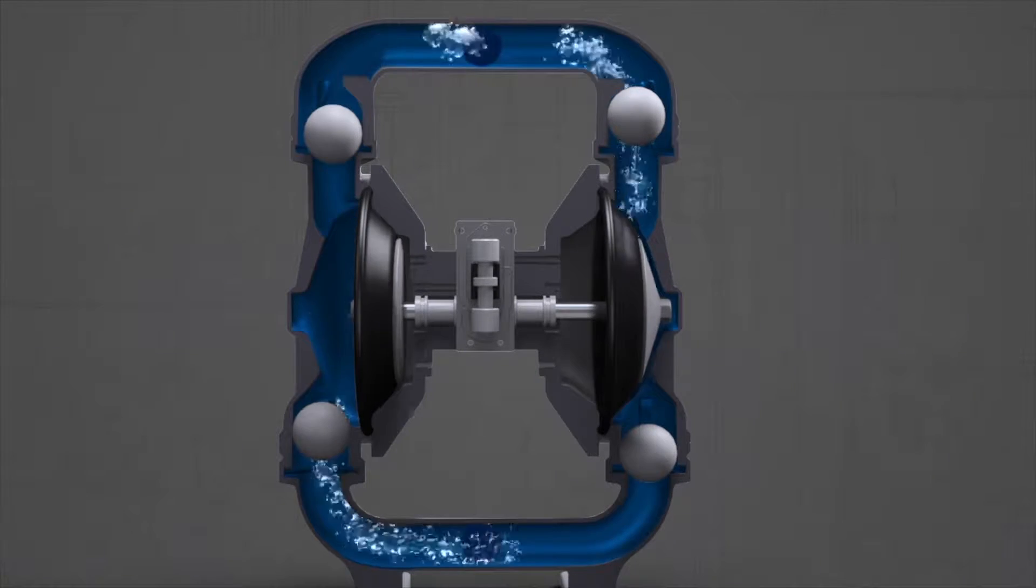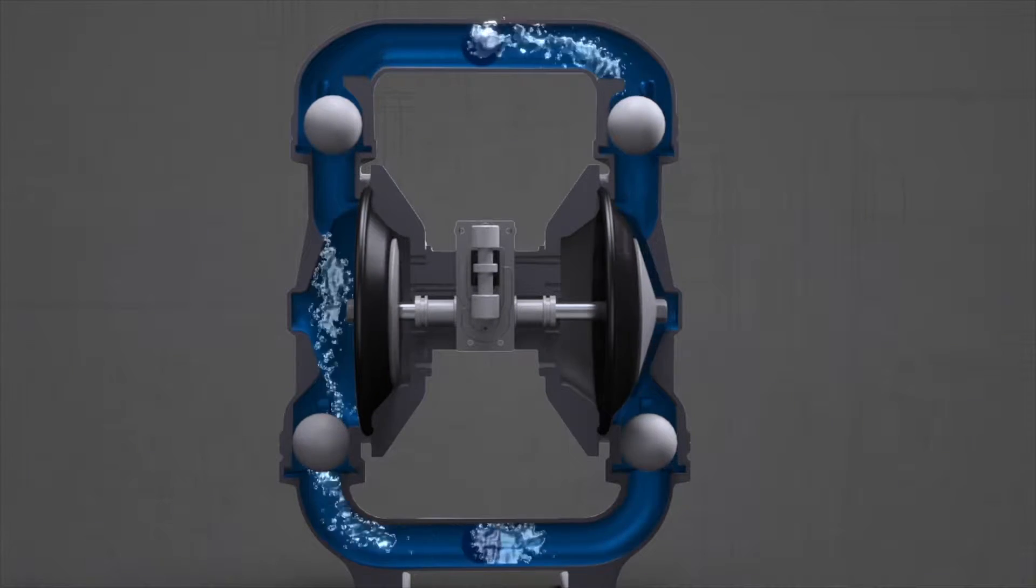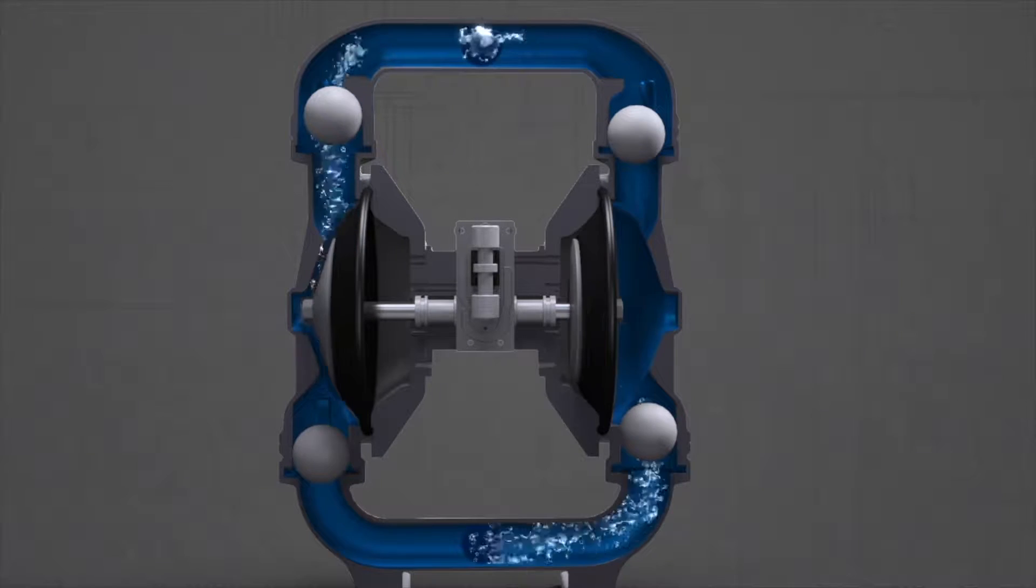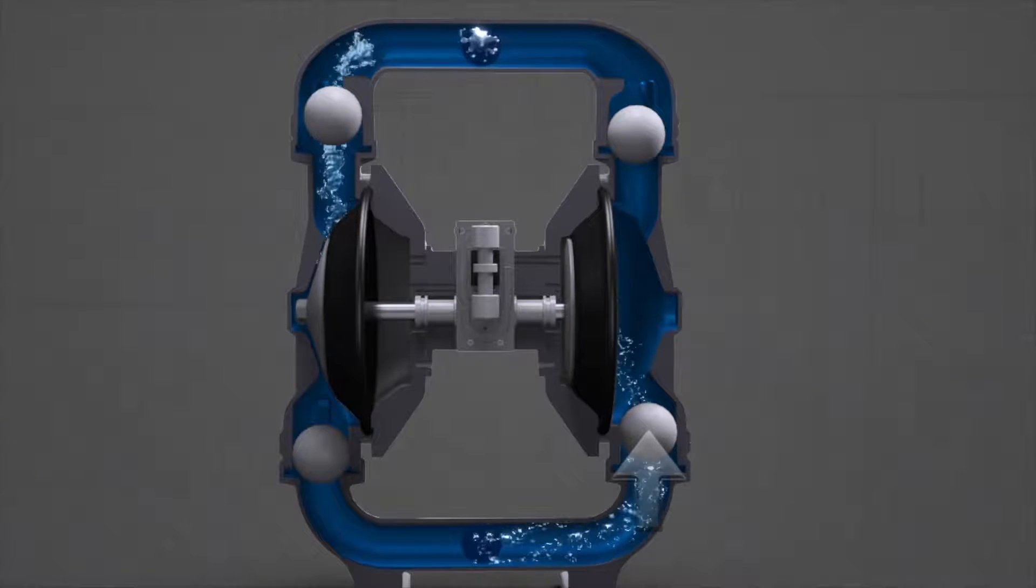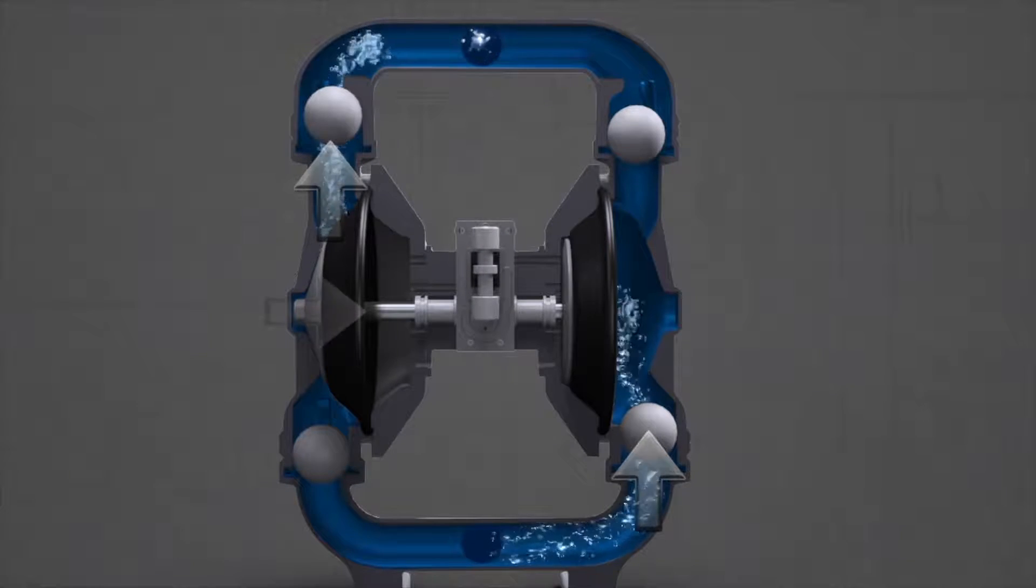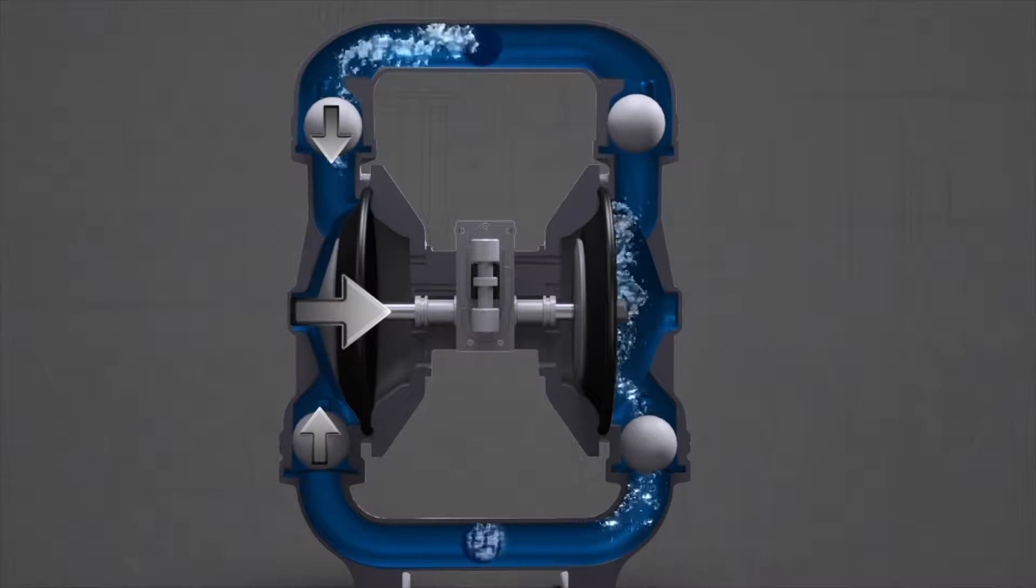Two diaphragms, connected by the diaphragm rod, work in unison to create the liquid motion of the pump. While one side is in suction mode, the other is in discharge mode. As a diaphragm moves inward, it creates suction.